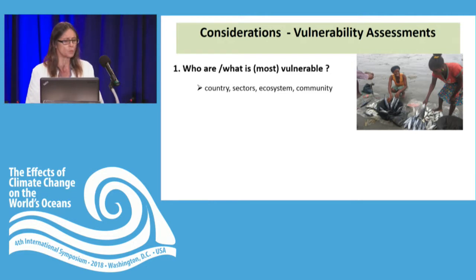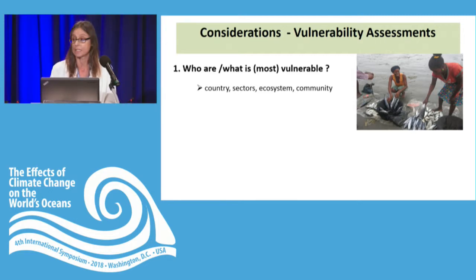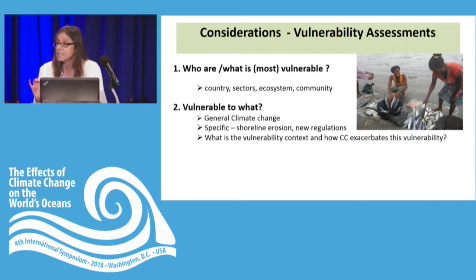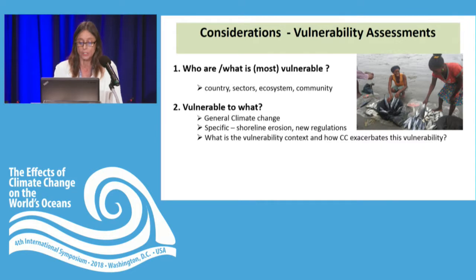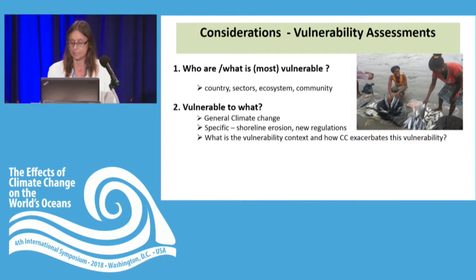There are some key considerations when approaching vulnerability assessments. We need to ask: who is most vulnerable? What is vulnerable — are we dealing at a country level, a particular sector like agriculture, an ecosystem, or at a community level? We also need to ask: vulnerable to what — climate change in general, or something specific like shoreline erosion or new fisheries regulations? From my perspective, I'm interested in exploring the vulnerability context of small-scale fishing communities and how climate change exacerbates that vulnerability context.